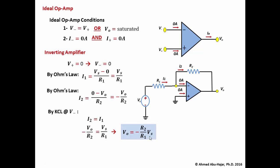This equation describes the output as a function of the input for the inverting amplifier — a very powerful equation that will appear frequently in op-amp circuits. The key steps were: forcing v minus equal to v plus (both at zero), solving for i1, equating it to i2, and solving for Vout.